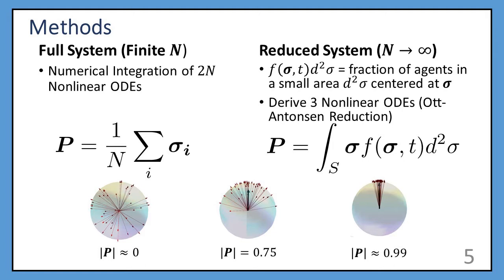In both cases, we describe the dynamics of the system with the order parameter, which is a vector that points in the average direction of the agents. If it's close to zero, the agents are spread out with low cooperation. If it's close to one, they are close together, associated with high cooperation.